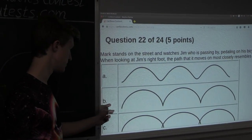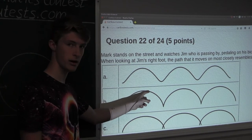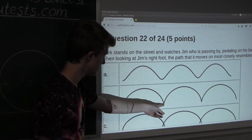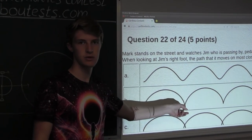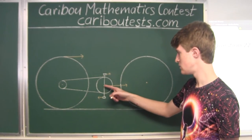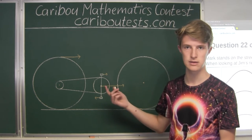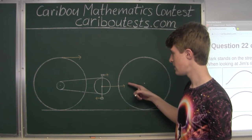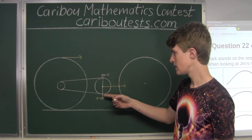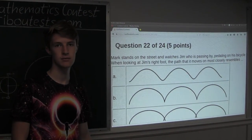Option B shows the same wider path at the top, but at the bottom it would be a standstill. That would mean the vector of the bike pedal at the bottom equals the vector of the bike frame in relation to the street. But we know that's not the case, because the bike frame moves faster in relation to the street than the pedal at the bottom moves in relation to the bike frame. Therefore, option B cannot be true.